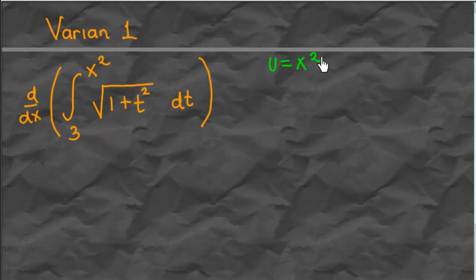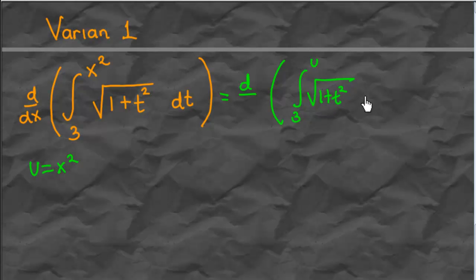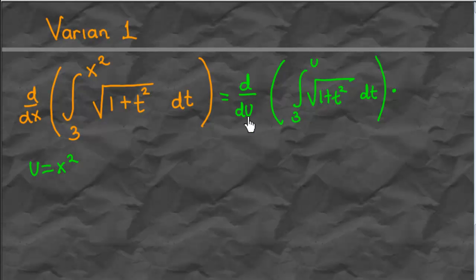With u equal to x², we can use the chain rule. So d/dx of that integral function is the same as the derivative with respect to u of the integral from 3 to u, multiplied by the derivative of u with respect to x. Now, with u instead of x², this becomes a function of u and we can apply the fundamental theorem of calculus.